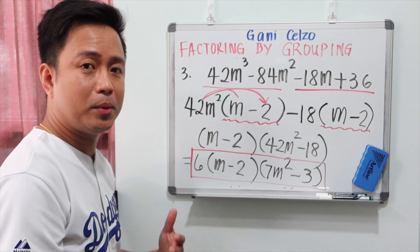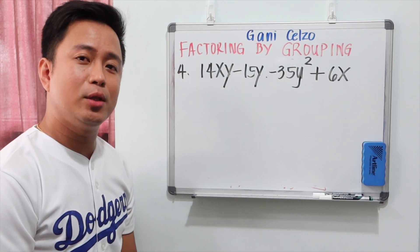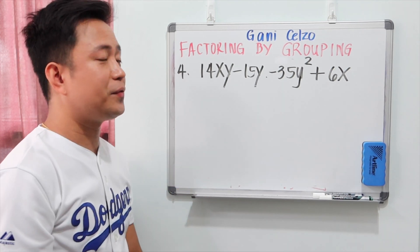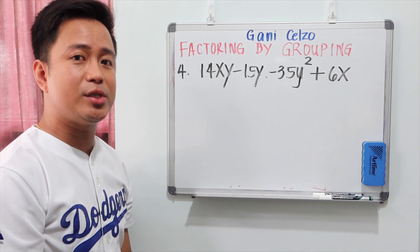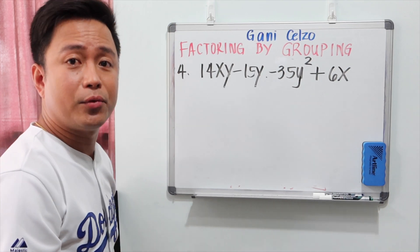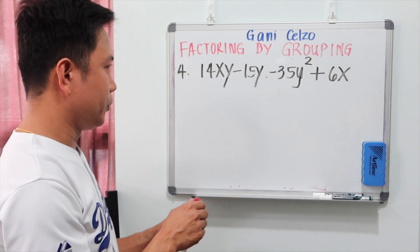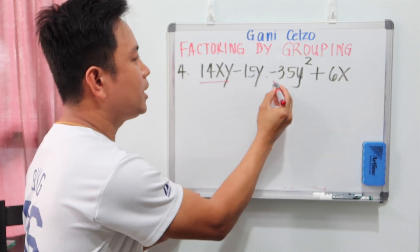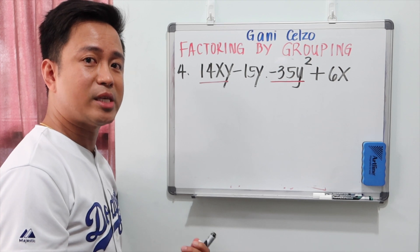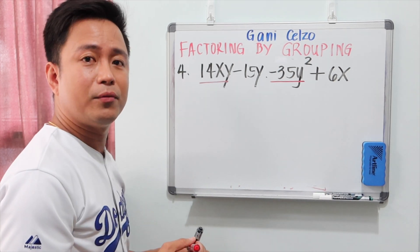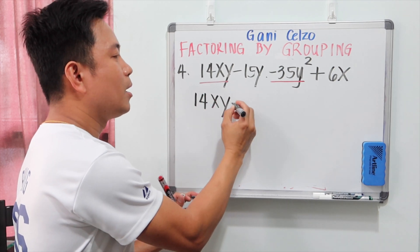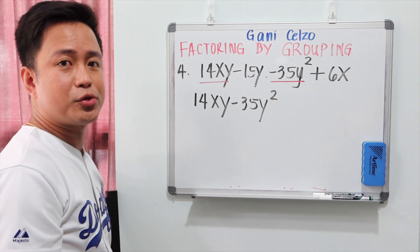For this next problem, look closely at the terms. If you group 14 and 15 together, and 35 and 6 together, it is difficult to get a GCF that gives the same parentheses for both groups. So this type of question requires regrouping and rearranging the terms. I will regroup 14xy and negative 35y squared as the first group, because grouping 14 and 35 lets you easily find a GCF of 7. The other two terms will be regrouped as the second group.